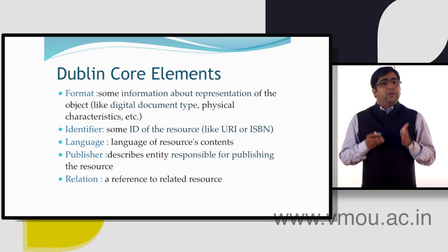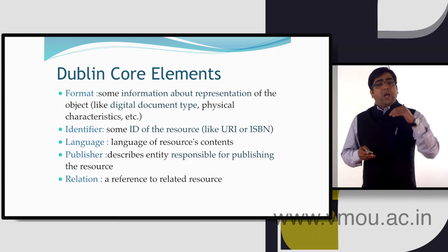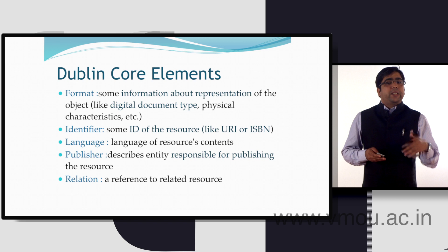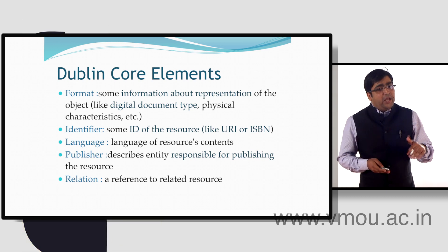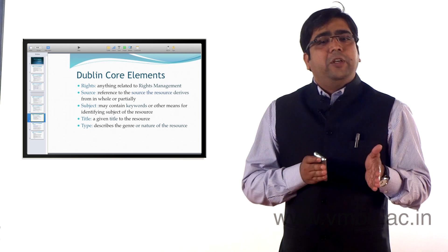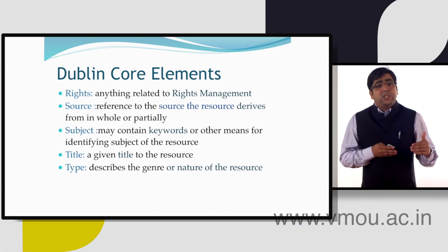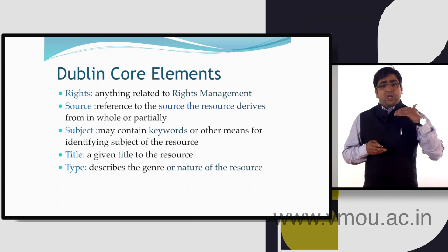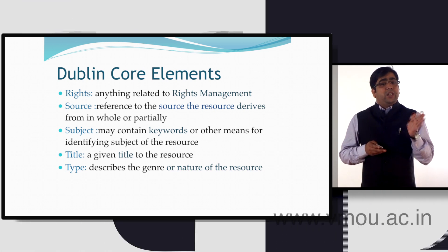Format carries the digital document type and its physical characteristics, while Identifier describes the ID of the resource — it may be a URI, ISBN, ISSN, or DOI. Language carries the language of the resource, while Publisher describes the entity responsible for publishing the resource. Relation carries the reference to related resources. The Rights element of Dublin Core contains information related to rights management, and many digital library software use this element to preserve integrity and handle rights management issues.